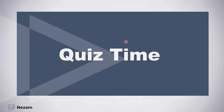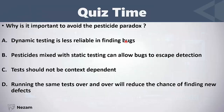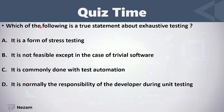Let's solve some questions on Section 7: Testing Principles. First question: why is it important to avoid the pesticide paradox? Running the same tests over and over will reduce the chance of finding new defects. The definition of the pesticide paradox is that when we run the same tests repeatedly, there is less chance that we find new defects.